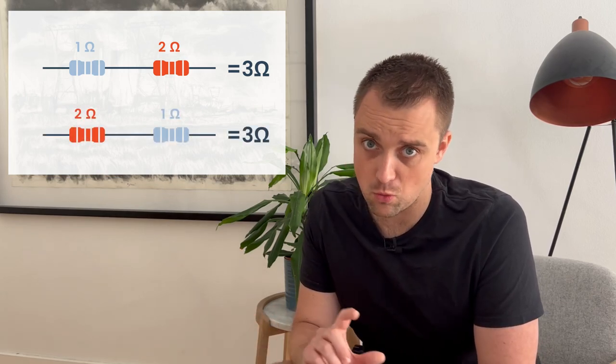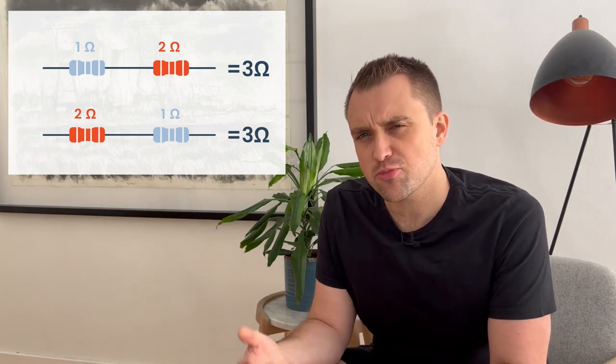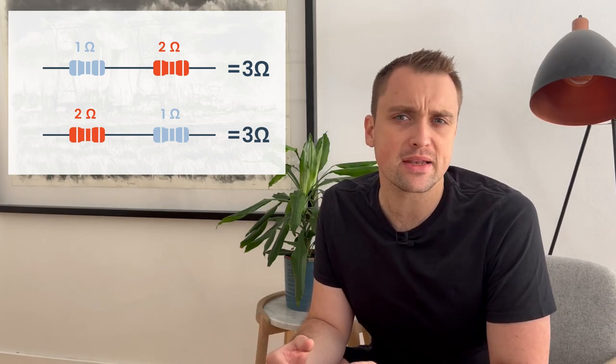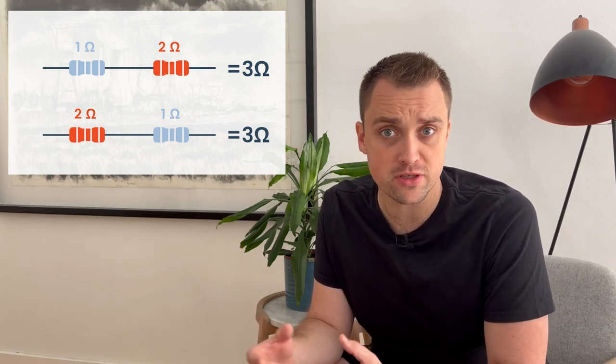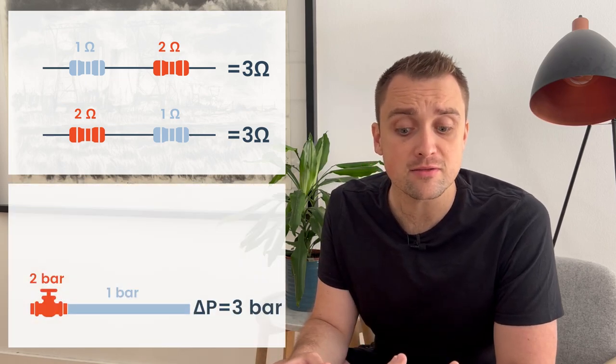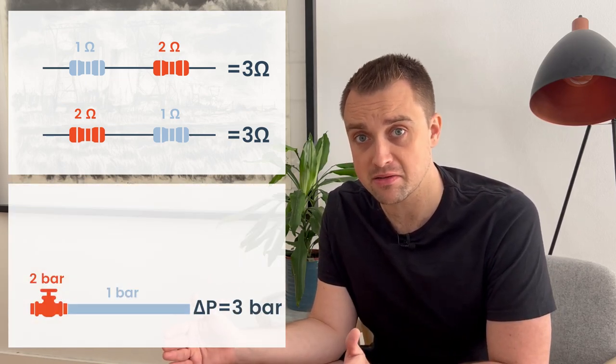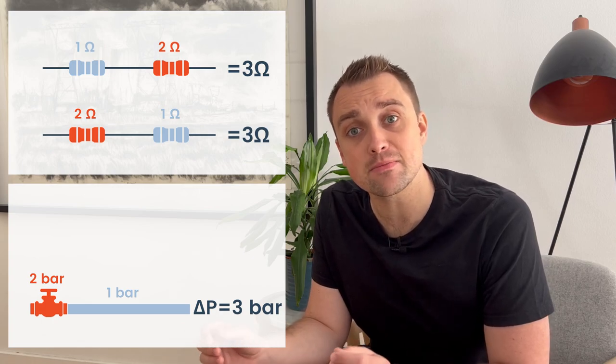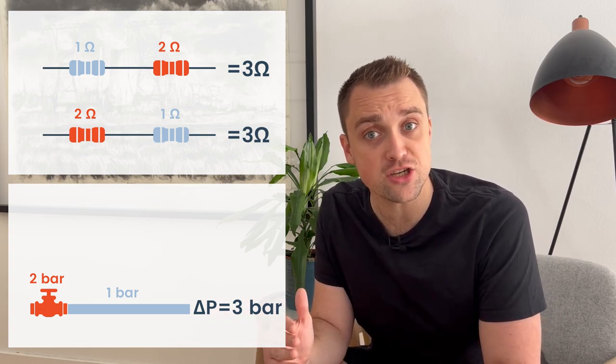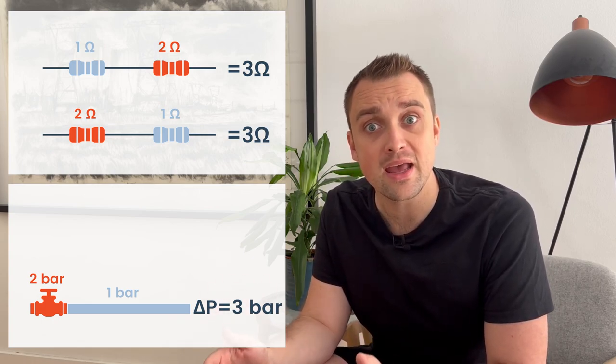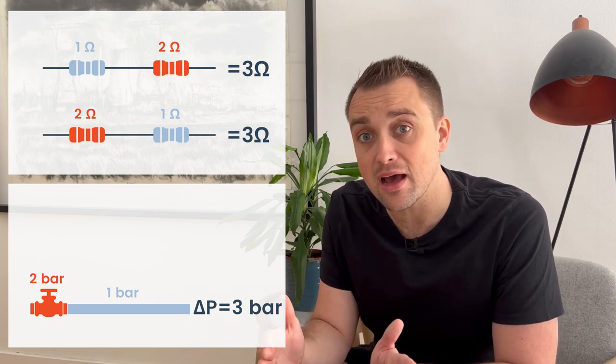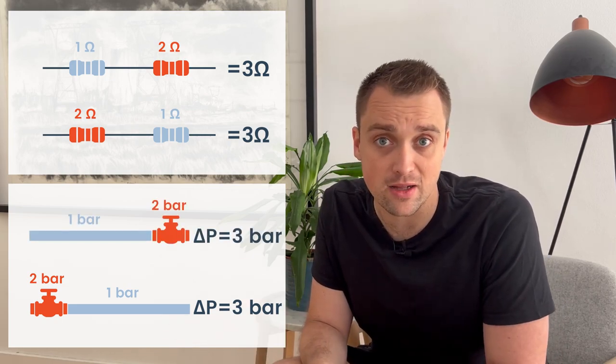So a one ohm resistor in series with a two ohm resistor has an overall resistance of three ohms, and that's regardless of which one comes first, the one or the two ohm resistor. That's pretty much the same thing that happens when we analyze pressure drop for components in series. A valve with 10 meters of piping downstream of it has the same system curve, which is a relationship between flow and pressure drop, as a 10 meter line with a valve on the end, assuming those are the same valve.